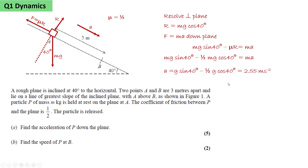We rearrange and get A equals g sin 40 minus a half g cos 40, which we can calculate to be 2.55 metres per second squared. Then we're asked to find the speed of P at B.